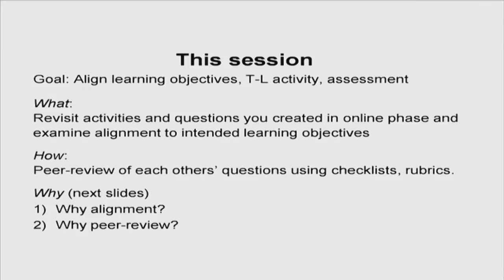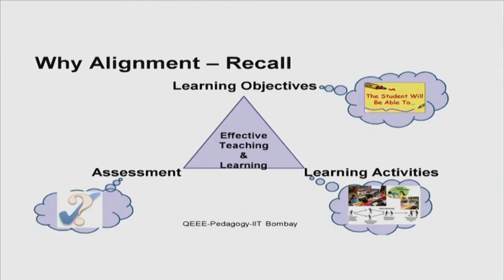The goal of the next session, which you'll be doing in the lab, is to align learning objectives, strategies, and assessment by revisiting your work and through peer review. Recall from the synchronous classroom sessions that we had these three facets of teaching and learning: the learning objectives, the learning activities or strategies, and the assessment. We discussed how these three need to be aligned with each other for effective teaching and learning. In one of the sessions we explored the alignment between the objectives and the assessment, and today we'll be looking at this alignment in more detail.